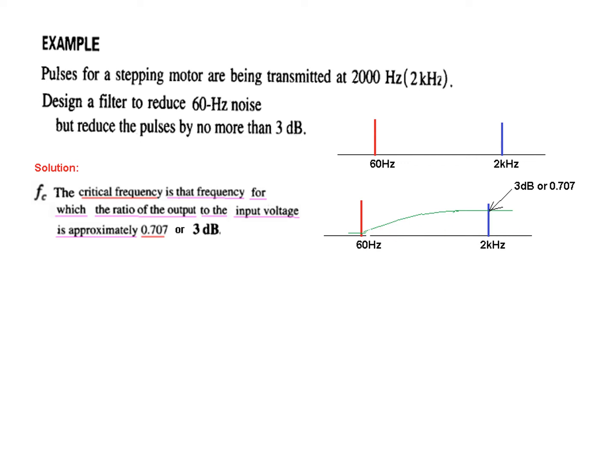As given, it is saying that reduce the pulse by no more than 3 dB. So this we can reduce up to 3 dB, and we also know that fc reduces to 0.707 or 3 dB. Therefore, we will consider this point to be the fc.